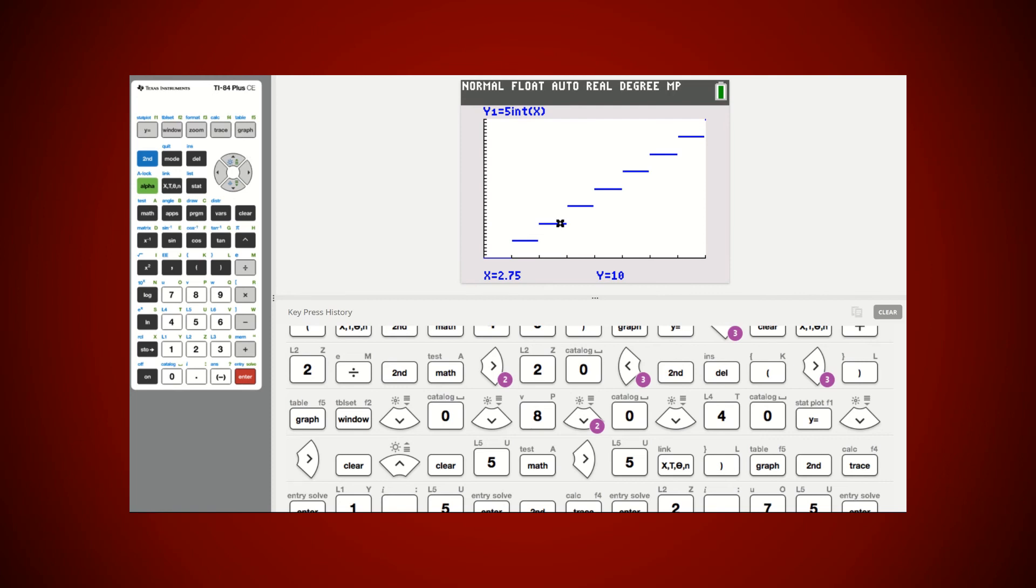That's how we can use our graphing calculator to use the math button, go to the number, pick number five integer. And that can allow me to graph a stair step and or greatest integer function.